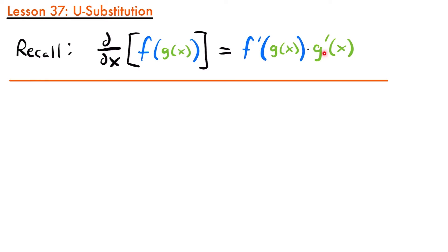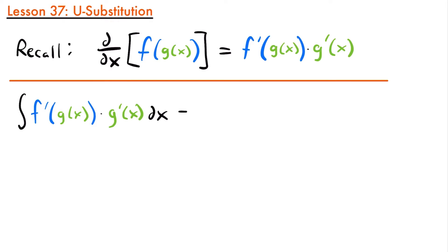If you recall, this is the chain rule. When we have the derivative of some outside function f(x) with an inside function g(x), the derivative of this composite function is equal to the derivative of the outside function with the same inside function, times the derivative of the inside function. If we reverse this process by integrating, we would have that the integral of f'(g(x)) times g'(x) dx equals f(g(x)) plus c. All that's happening is we are reversing the chain rule to get back our original function — the antiderivative.